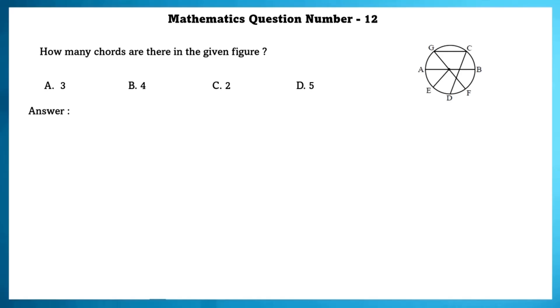Mathematics question number 12. How many chords are there in the given figure? The chords in the given circle are AB, GC, DC, and GF.